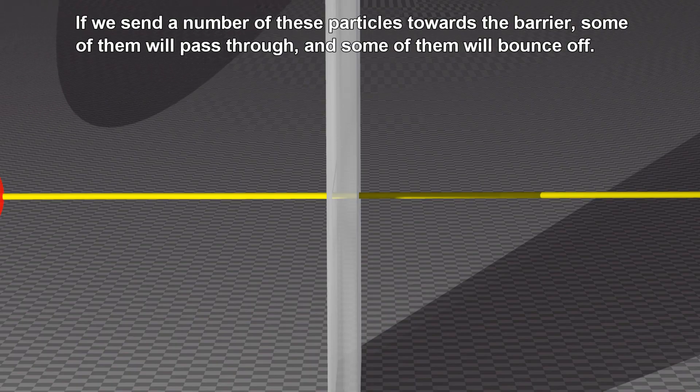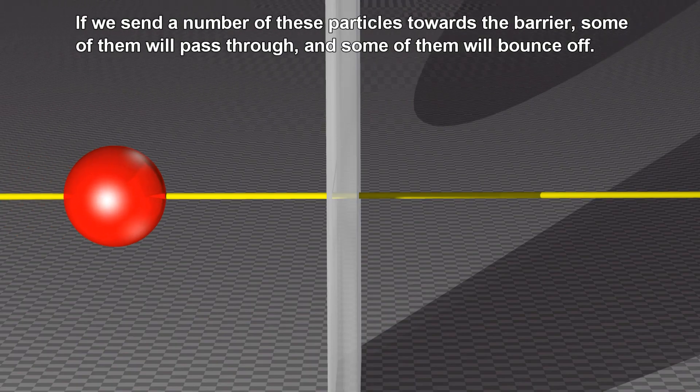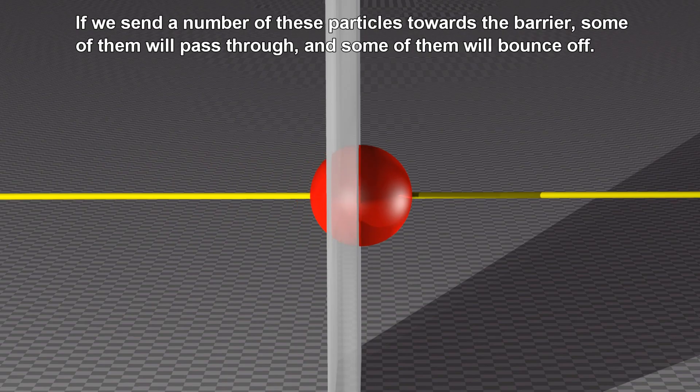If we send a number of these particles towards the barrier, some of them will pass through, and some of them will bounce off.